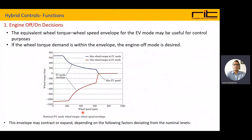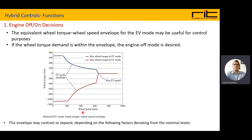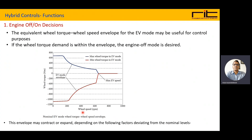The hybrid control functions. First is the engine on/off decisions. The equivalent wheel torque and wheel speed envelope for an electric vehicle mode may be useful for control purposes. When the wheel torque demand is within the envelope, the engine-off mode is taken or desired. Here we can see the envelope showing the maximum and minimum wheel torque in EV mode. Within this envelope, EV mode is used and the engine is turned off.